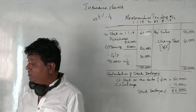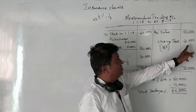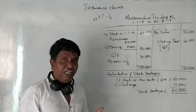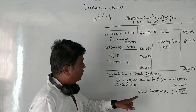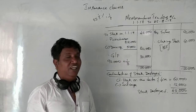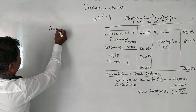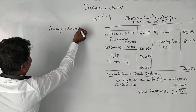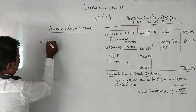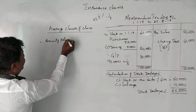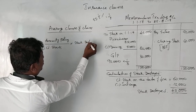The insurance policy is ₹50,000. Since the policy includes an average clause, we must apply the average clause formula. The claim under average clause equals: (Amount of policy taken ÷ Closing stock on date of fire) × Stock destroyed. So: ₹50,000 ÷ ₹60,000 × ₹45,000.